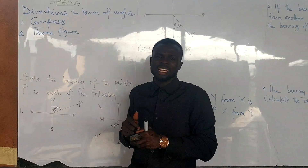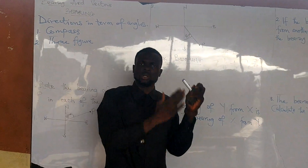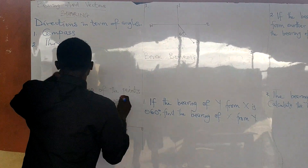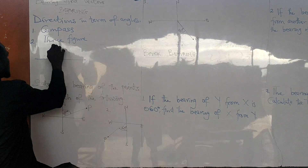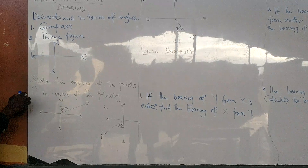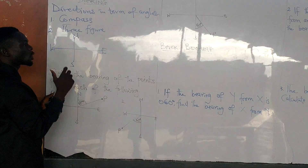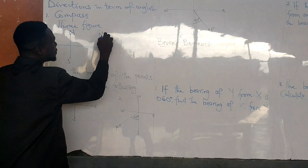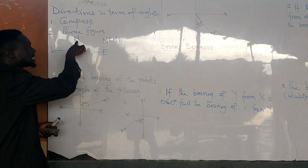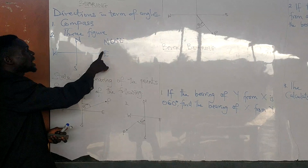With the compass bearing, it deals with the four cardinal points, which are the north, the south, the west, and the east. To tell a direction using the compass, we can say north 60 degrees east, which simply means starting from the north towards the east, measure 60 degrees.